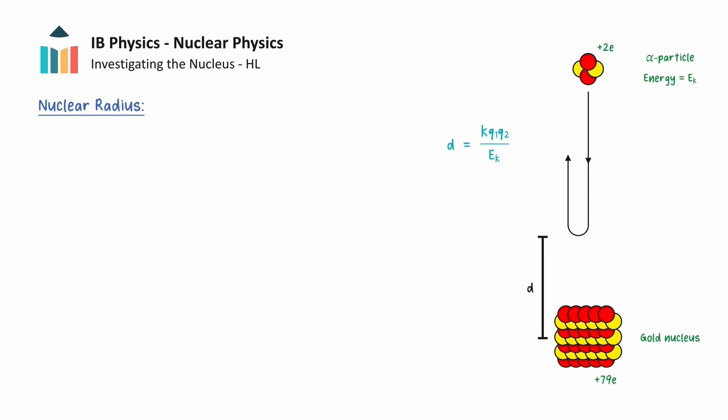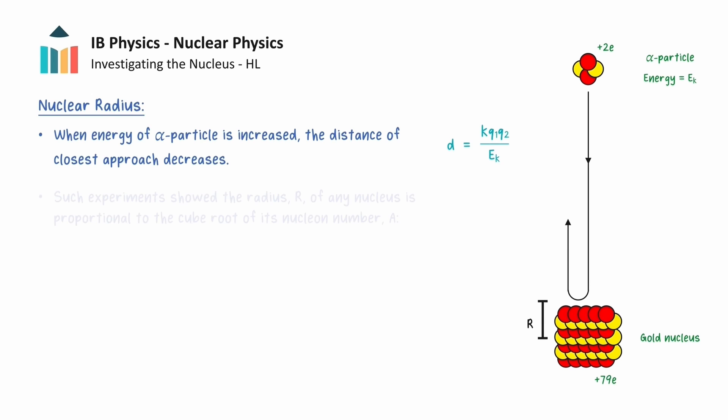From this equation, we see that when the energy of the alpha particle is increased, the distance of closest approach decreases. This energy can be continued to be increased until the distance approaches the radius of the nucleus. Such experiments have shown that the radius of any nucleus is proportional to the cube root of its nucleon number by the following formula.